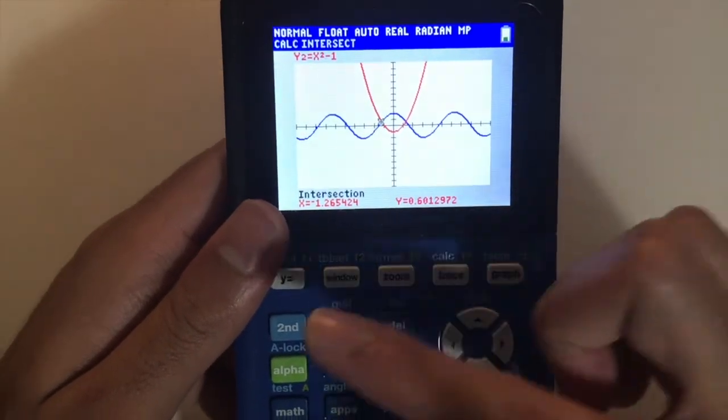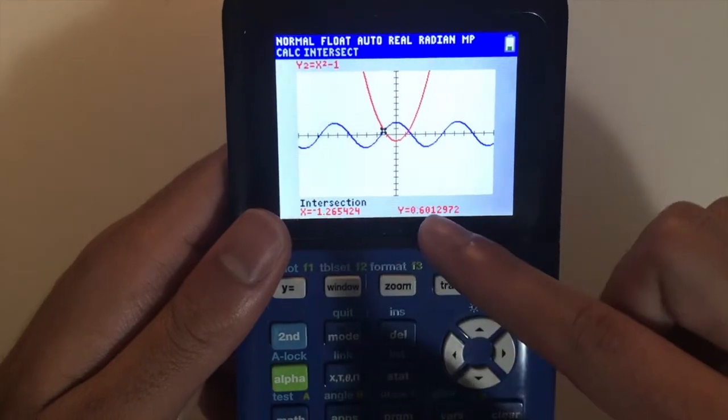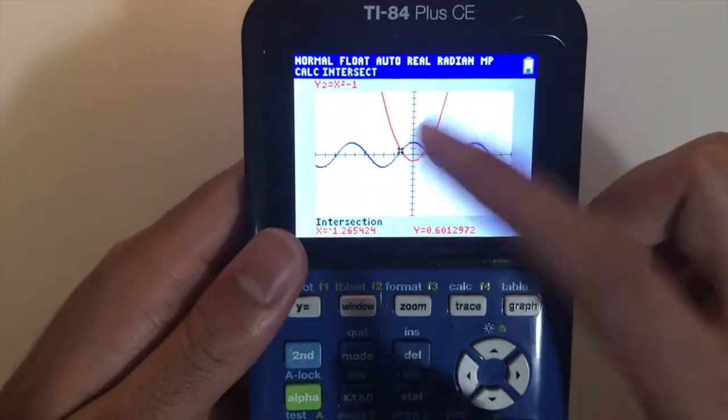Press enter. And boom, you got your x coordinate and your y coordinate of that second point of intersection.